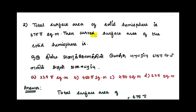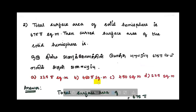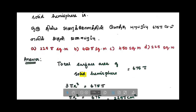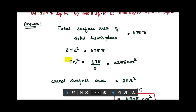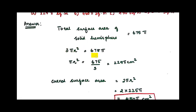The total surface area of the solid hemisphere is 675π cm². The curved surface area of the solid hemisphere is what we need to find. The total surface area of a solid hemisphere equals 3πr², so 3πr² equals 675π.